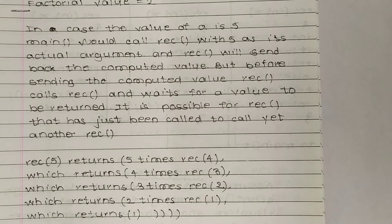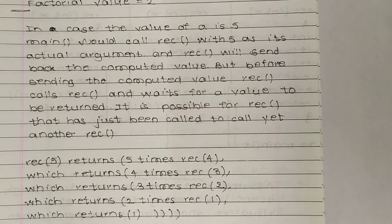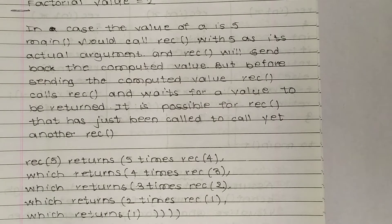But before sending the computed value, rec calls rec and waits for a value to be returned. So first, 5 is computed. Before sending the computed value, rec calls rec and waits for a value to be returned. It is possible for rec that has just been called to call yet another rec.